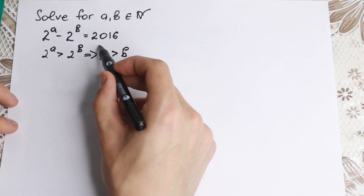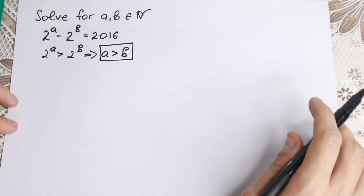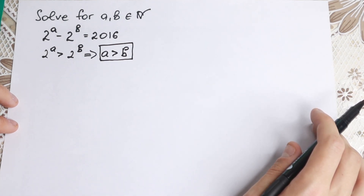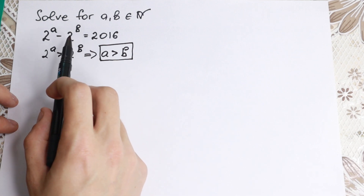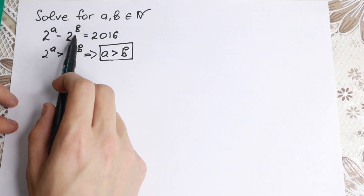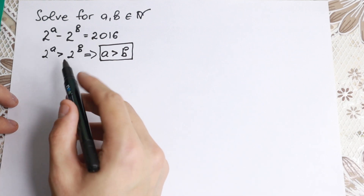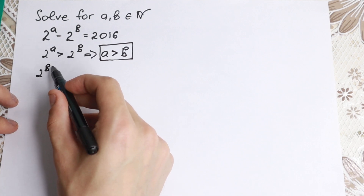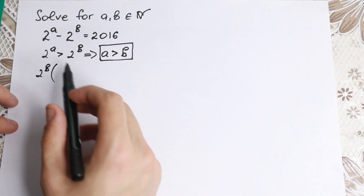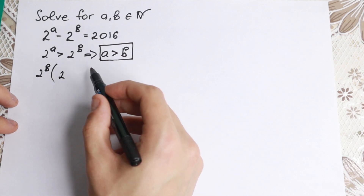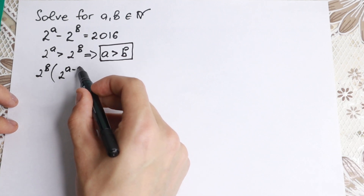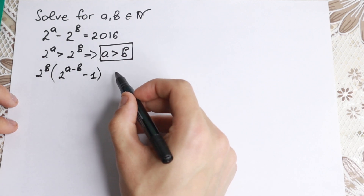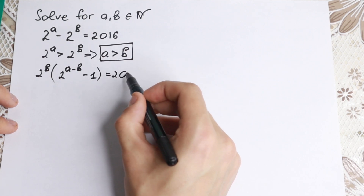This is a really important moment for us. What we're going to do next? Take a look closely — let's factor out 2 to the power b from this equation. When we factor out 2 to the power b, we get 2 to the power b times (2 to the power (a minus b) minus 1) equal to 2016.